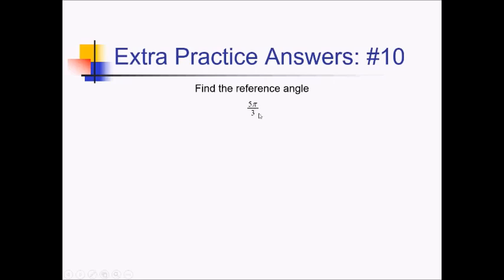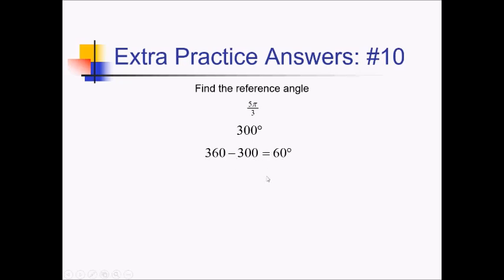To get the reference angle on this problem, let me first convert this to degrees. Multiplying by 180 over pi: 180 divided by 3 is 60; times 5 is going to be 300, and the pi's cancel. So this is going to be 300 degrees. Now how far away is that from the closest x-axis angle? The closest angle is going to be 360, so 360 minus 300 is going to give us a reference angle of 60 degrees.